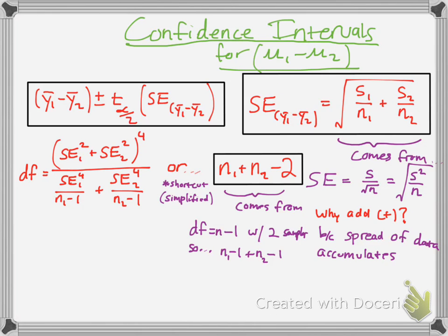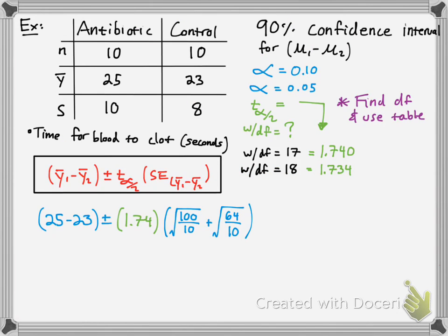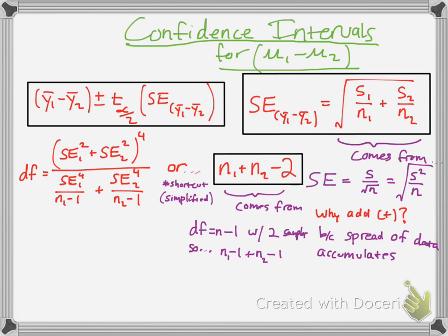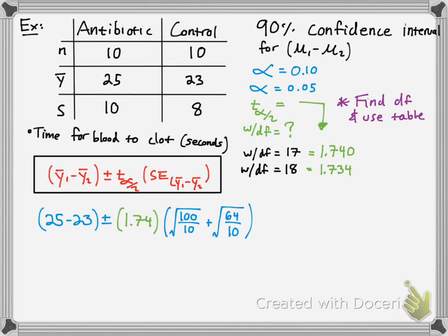So our t alpha over 2 value, we'll just use the degree of freedom with 17, and we'll have our 1.74 value, which we calculated. Then you simply use your standard error, which was given in this formula. So our standard deviation squared over the sample size. We get this numerical value here. We continue to simplify, and we get 2 plus or minus 9.9 approximately.